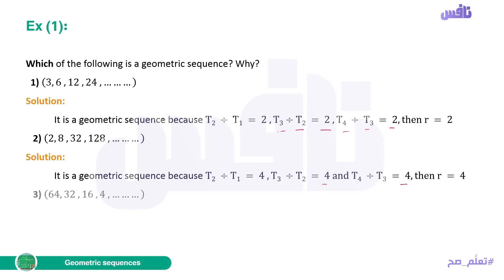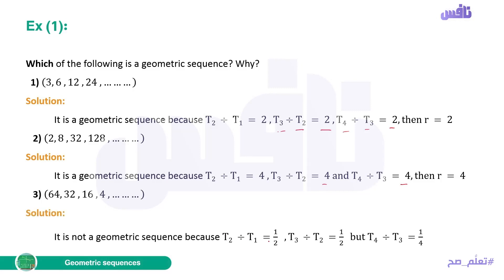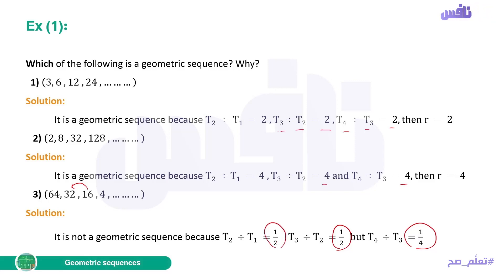Now consider: 64, 32, 16, 4. T2 divided by T1 is 32 over 64 equals 1/2. T3 divided by T2 is 16 over 32 equals 1/2. But T4 divided by T3 is 4 over 16 equals 1/4, not 1/2. So R is not constant — this is NOT a geometric sequence, because T4/T3 does not equal T3/T2.